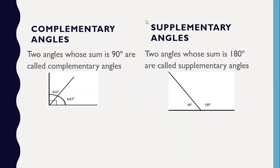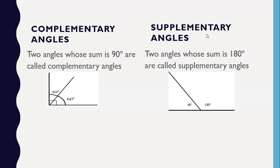Now, what about complementary and supplementary angles? Two angles having a sum of 90 degrees are called complementary angles. For example, 60 degrees and 30 degrees: their sum equals 90, so 60 is the complement of 30. Supplementary angles are two angles having a sum equal to 180 degrees.